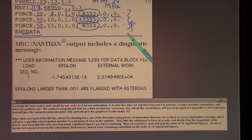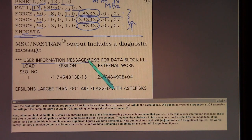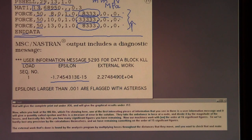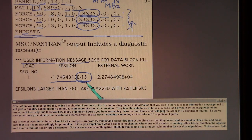Now, when you look at the F06 file, which I'm showing here, one of the first interesting pieces of information that you see in there is a user information message. And it will give a quantity called epsilon. And this is a measure of error in the solution. They take the unbalance in force at a node and divide it by the magnitude of the forces. And basically this tells you how many significant figures you have remaining. Now, our machines work with, in the order of 16 significant figures, so we've hardly lost any precision by the calculations themselves. And we have remaining something on the order of 15 significant figures.